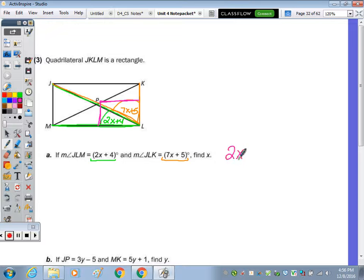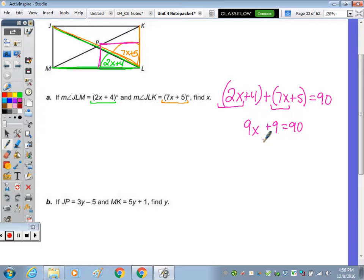So I'm going to take 2x plus 4 and add it to 7x plus 5, and set that equal to 90. Combining like terms: 2x and 7x is 9x, and 4 plus 5 is 9, equals 90. To solve for x, we subtract 9 and divide by 9. 81 divided by 9...